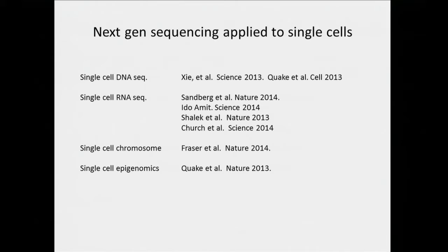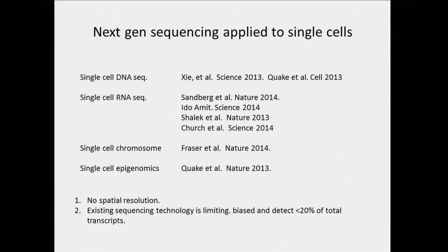Sequencing is a really powerful method because you can look at many genes at the same time — the whole transcriptome simultaneously — whereas the microscopy method limits you to a few things at a time, albeit very precisely. But the problem with the sequencing approach is that you need to isolate cells from tissues. Because of biases in the chemistry, it's very hard to do an unbiased sequencing of the transcriptome, and typically you're restricted to looking at less than 20% of the total RNAs.